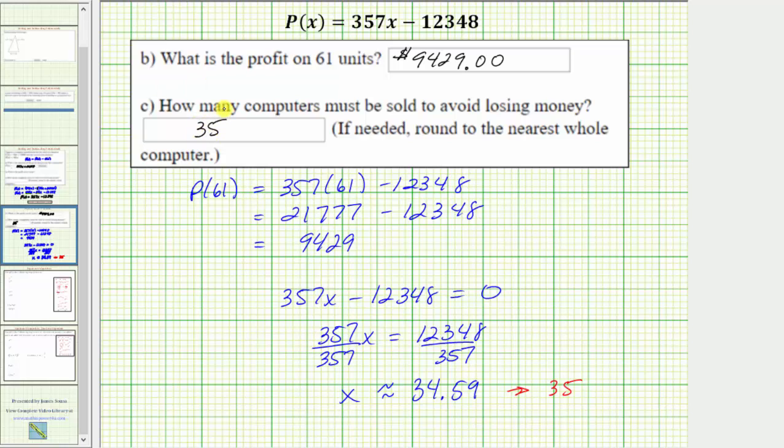So it is important to recognize here, even if this was 34.1, we would still round up to 35 because we can't sell a fraction or decimal part of a computer. And if we sold less than this approximation, the company would lose money. And the question is how many must be sold to avoid losing money. So we'll always have to round up to the next whole number unless the quotient is an exact whole number.